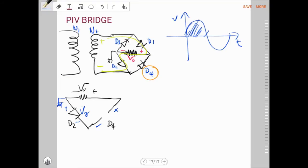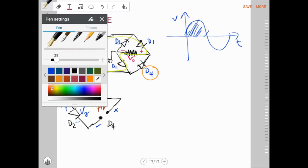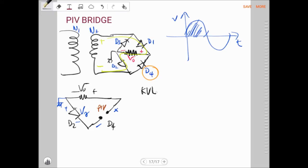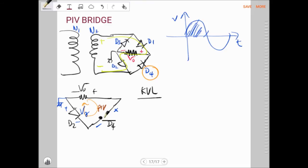We want to find the peak inverse voltage, PIV, across here. If we do a KVL: plus PIV minus V_gamma minus V_out equals zero. So PIV equals V_out plus V_gamma.